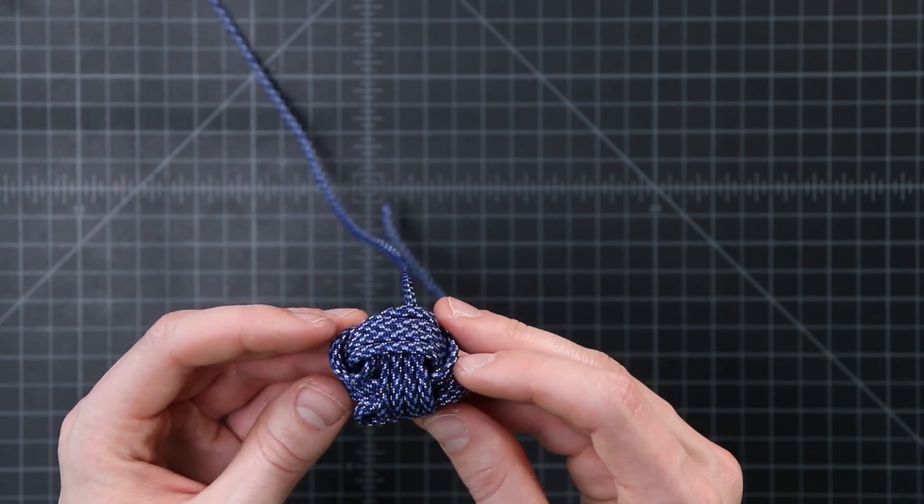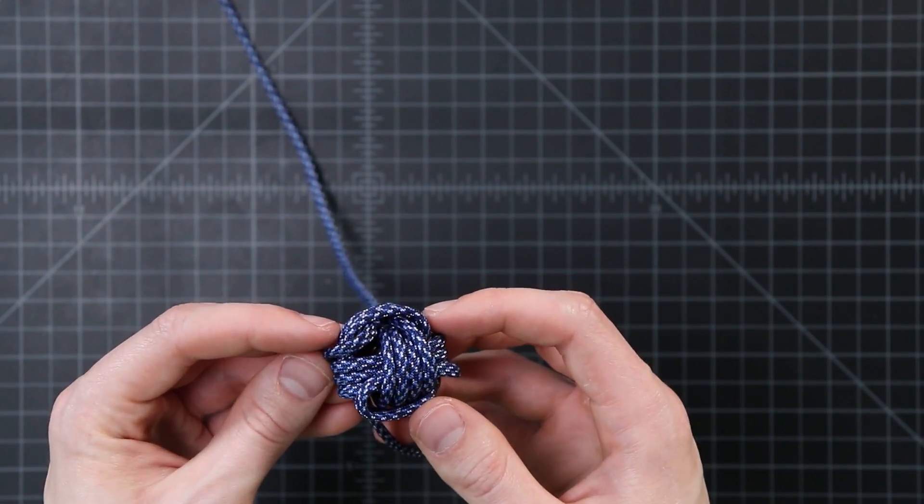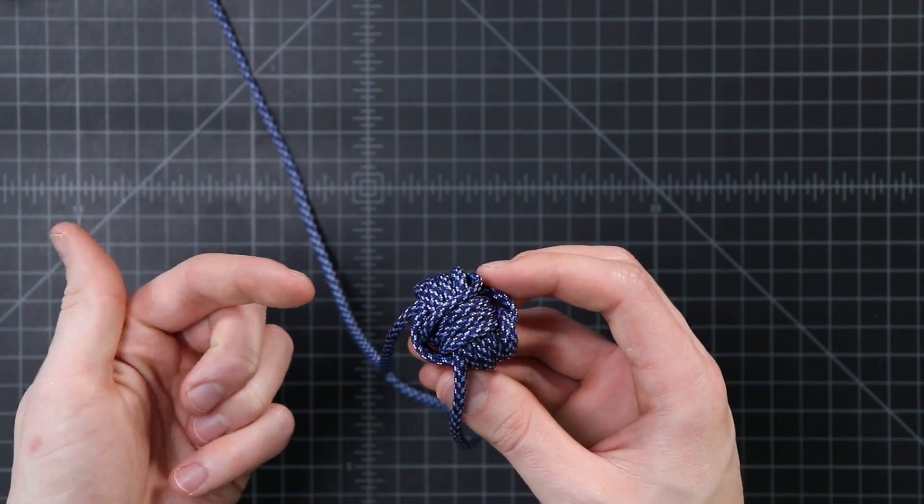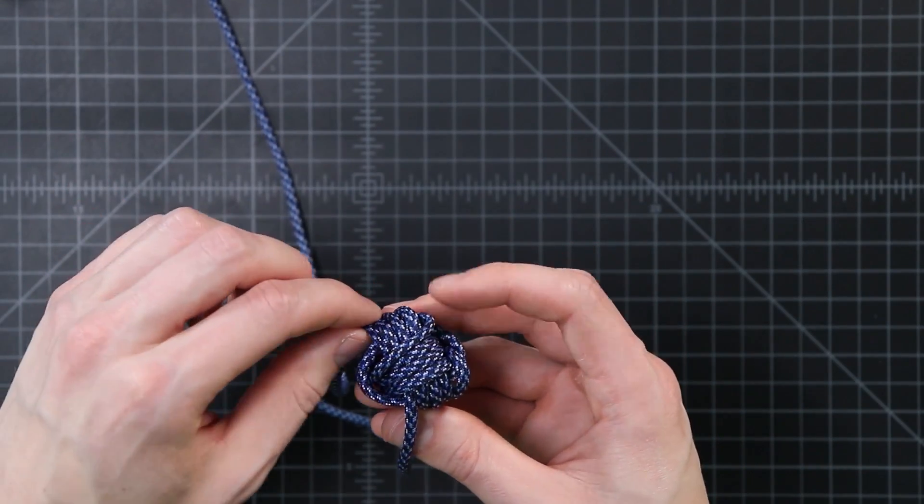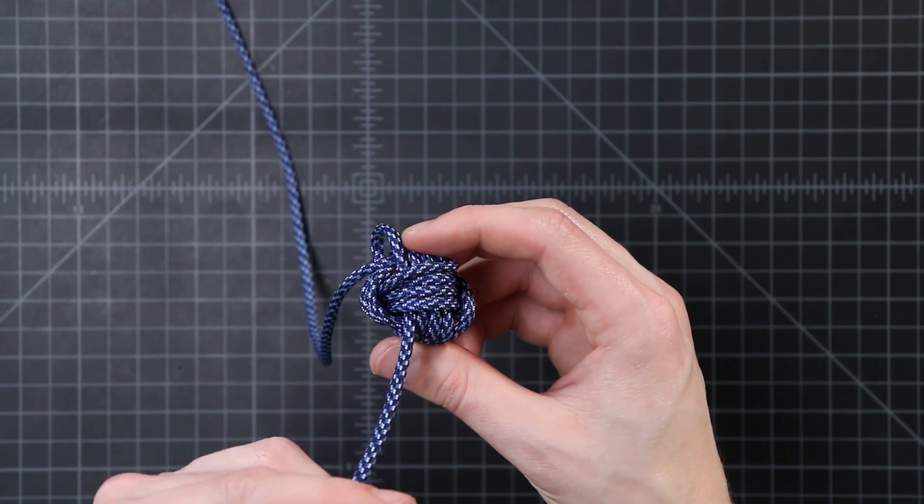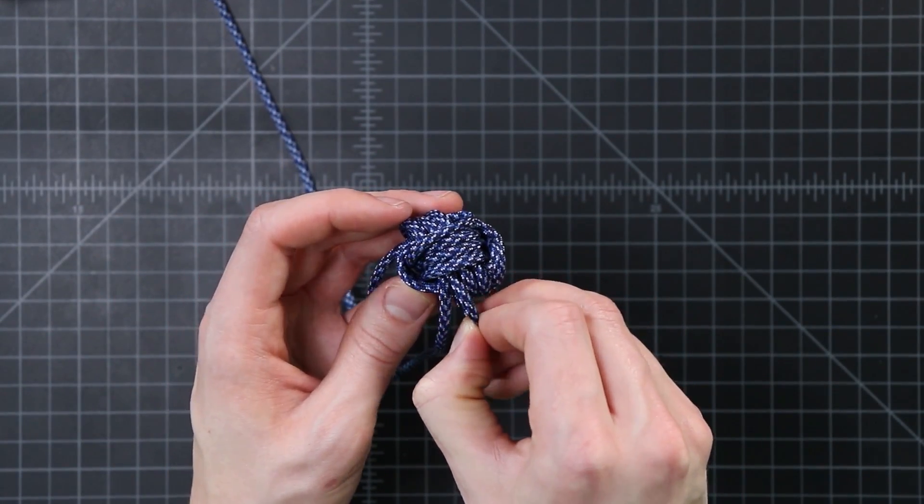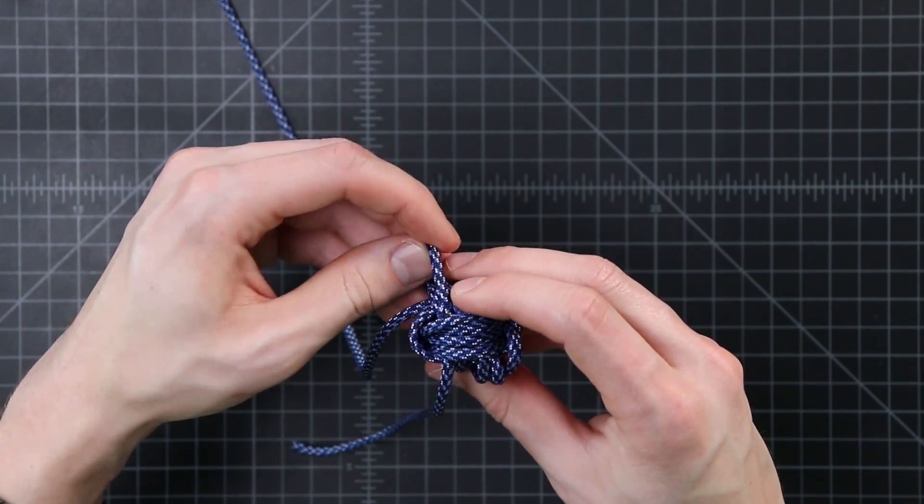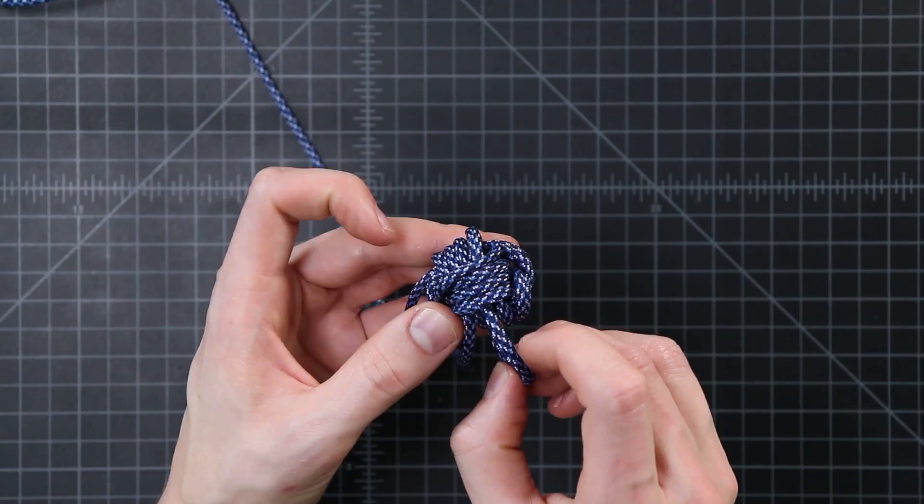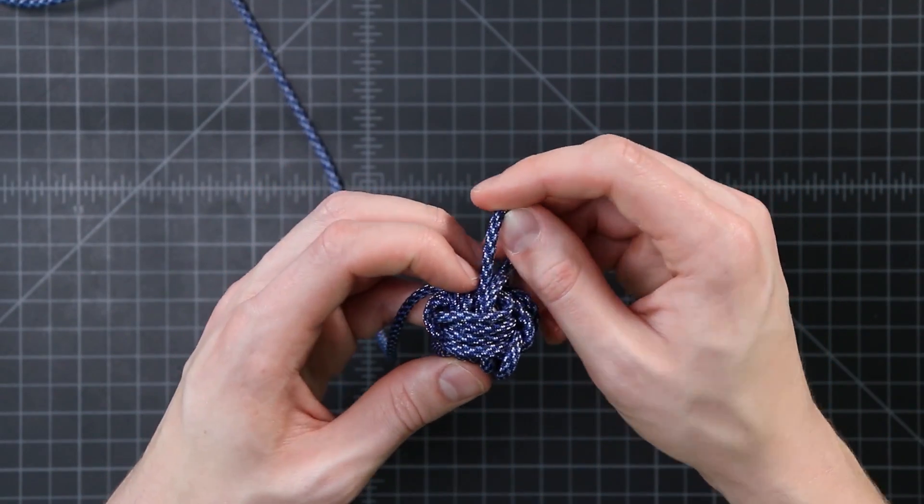So now comes the tricky part. We've got to tighten this all down evenly around our ball bearing. So what I usually do is start at one end and begin feeding the cord through, tightening it as I go. So we've got this loop sticking out here. And this is our short end. So I'm going to be tightening down that next loop. And then just working it back and forth. Taking out the slack as I go. All the way down those 4 wraps around that direction.